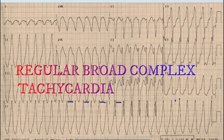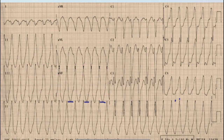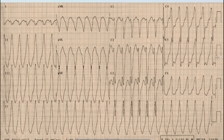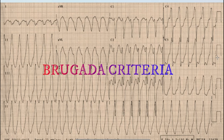As discussed in earlier videos, the differentials of a regular broad complex tachycardia are ventricular tachycardia and antidromic supraventricular tachycardia with aberrancy. The criteria we use to differentiate ventricular tachycardia from SVT with aberrancy are the Brugada criteria.